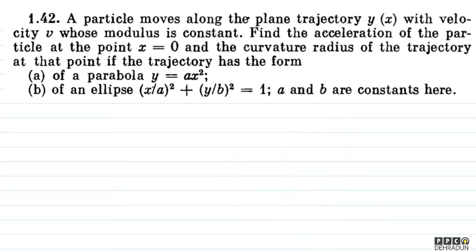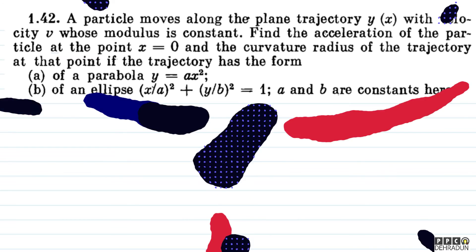The question says: a particle moves along the plane trajectory y as a function of x with velocity v, whose modulus is constant. Find the acceleration of the particle at the point x equal to 0 and the curvature radius of the trajectory, if the trajectory has the form of a parabola y equal to ax squared, and in the second part an ellipse x upon a squared plus y upon b squared is equal to 1, where a and b are constants.